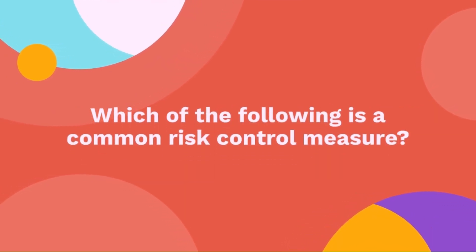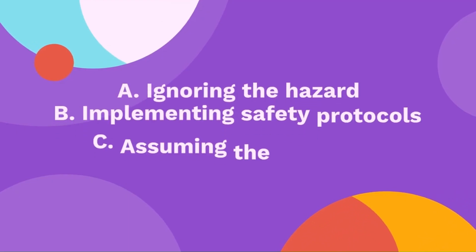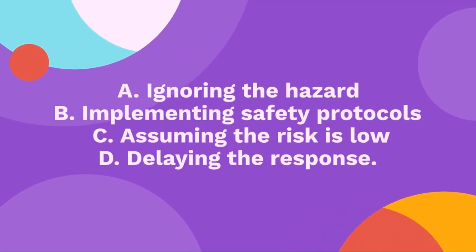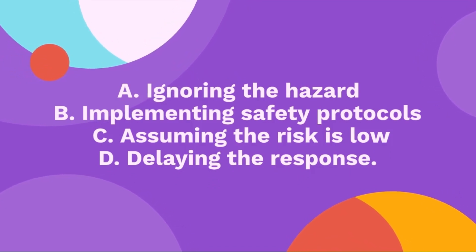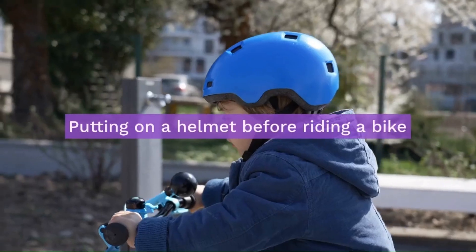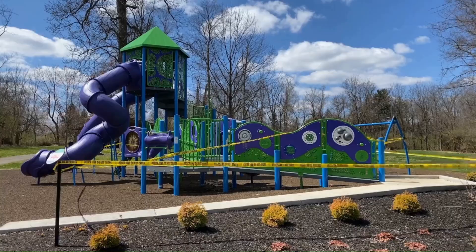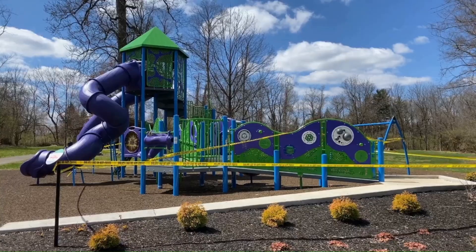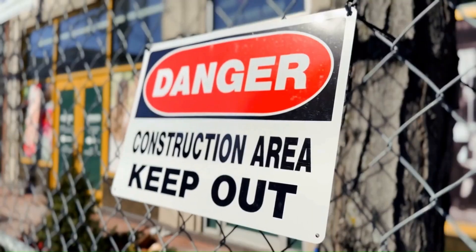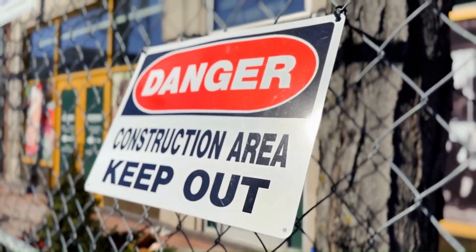Question 22: Which of the following is a common risk control measure? A — ignoring the hazard, B — implementing safety protocols, C — assuming the risk is low, D — delaying the response. The correct answer is implementing safety protocols. Implementing safety protocols is like putting on a helmet before riding a bike — it's a preventive measure that keeps you safe. Safety protocols are your first line of defense against workplace hazards.